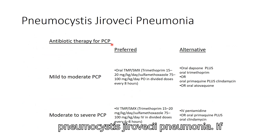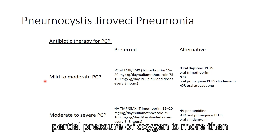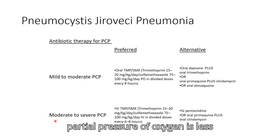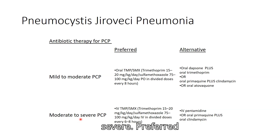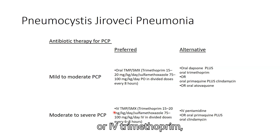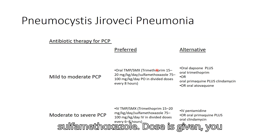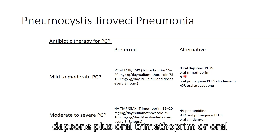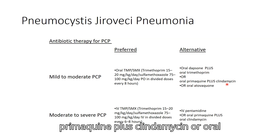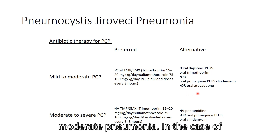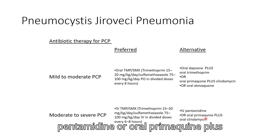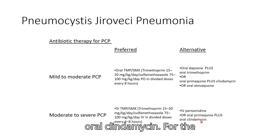For antibiotic therapy: if partial pressure of oxygen is more than 70 mmHg, pneumonia is mild to moderate; if less than 70 mmHg, it is moderate to severe. The preferred regimen is oral or IV trimethoprim-sulfamethoxazole. Alternative regimens include oral dapsone plus oral trimethoprim, oral primaquine plus clindamycin, or oral atovaquone for mild to moderate disease. For moderate to severe disease, IV pentamidine or oral primaquine plus oral clindamycin may be used.